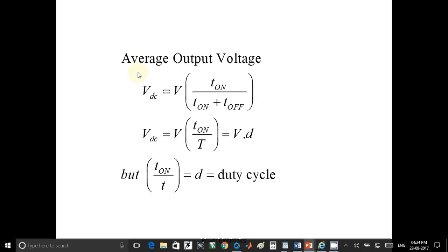We can obtain the formula for average output voltage for chopper. Vdc is equal to supply voltage V into T on upon T. T on upon T is the duty cycle, denoted by D. So final output Vdc is given by V into D, or supplied voltage into duty cycle.